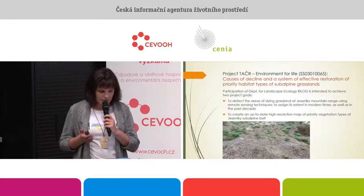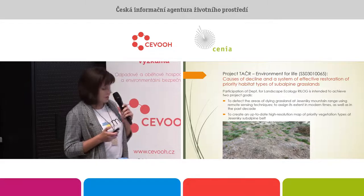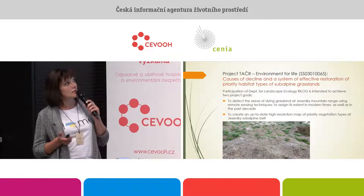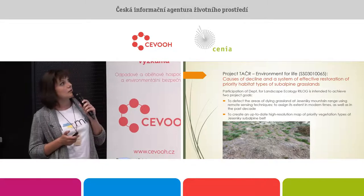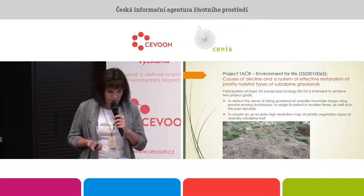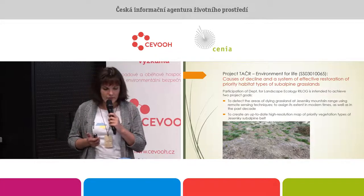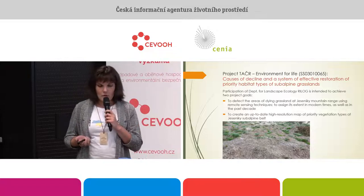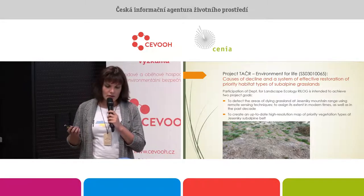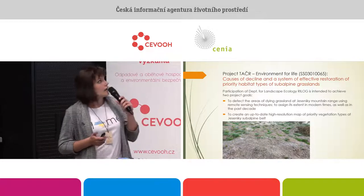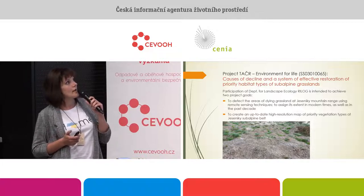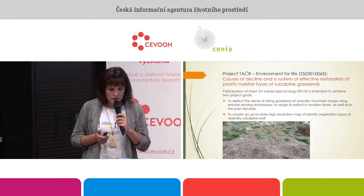The first task is to detect the areas of dying grassland at Jeseníky Mountain Range using remote sensing techniques and to assess its extent in modern times as well as in the past decade — in other words, to make a retrospective analysis, which should provide answers to questions like when the event actually started, how great was the effect, whether the grass has been recovering and how fast. The second task is to create an up-to-date high-resolution map of priority vegetation types at Jeseníky, also using remote sensing techniques.